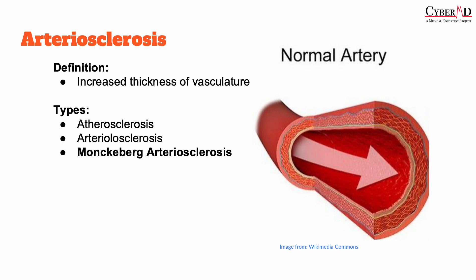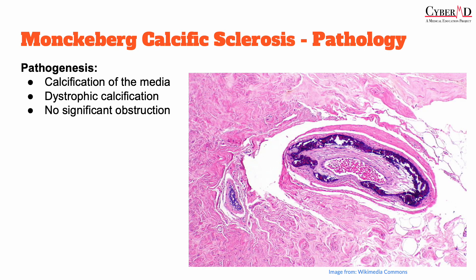This is the final lecture over the various forms of arteriosclerosis, which has included various pathologies that all include some form of increased thickness of the vasculature. Monckberg's calcific sclerosis is a specific form of arteriosclerosis that is characterized by the calcification of the media of muscular, medium-sized arteries.